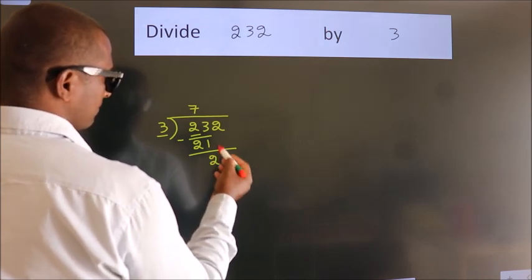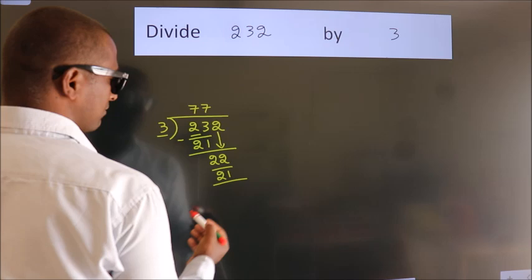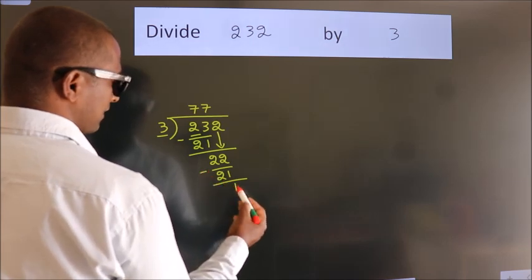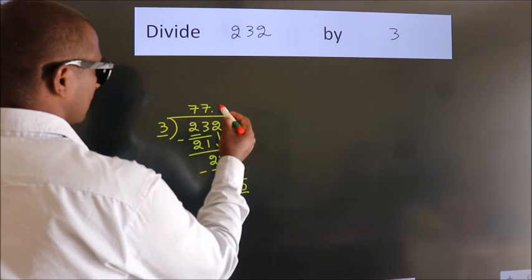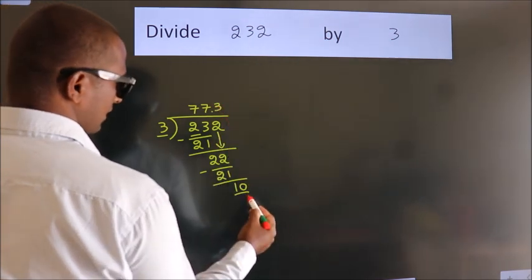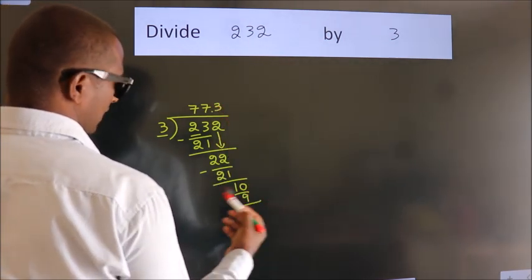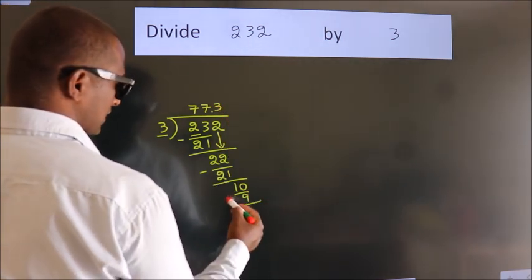Next, here we have 2, here 3. 2 is smaller than 3, so we should take 2 numbers: 23. A number close to 23 in the 3 table is 3 times 7, which is 21.